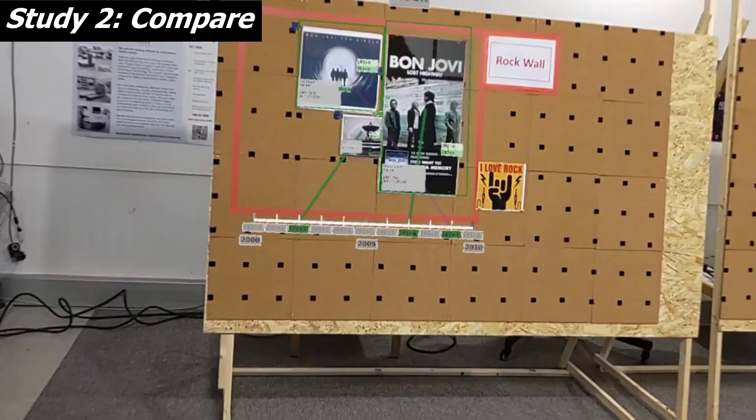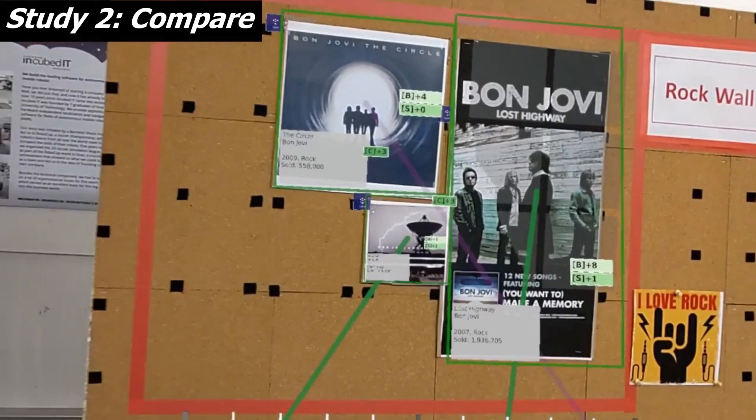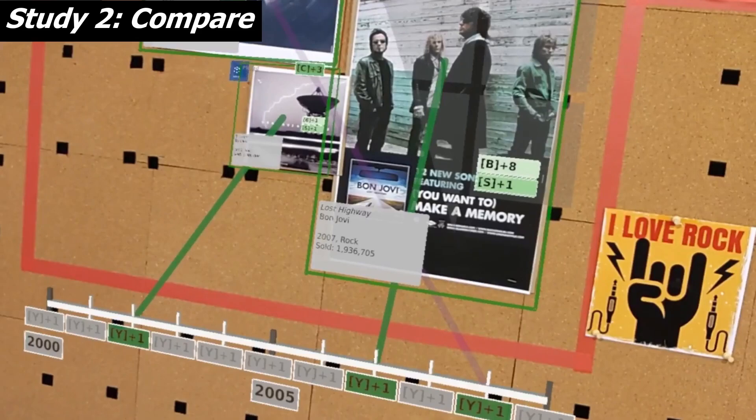This is the view shown by the HoloLens. Green leader lines represent correct year placements, purple leader lines represent conflicts. The grey areas show data of the records. The same goes for the pop wall.